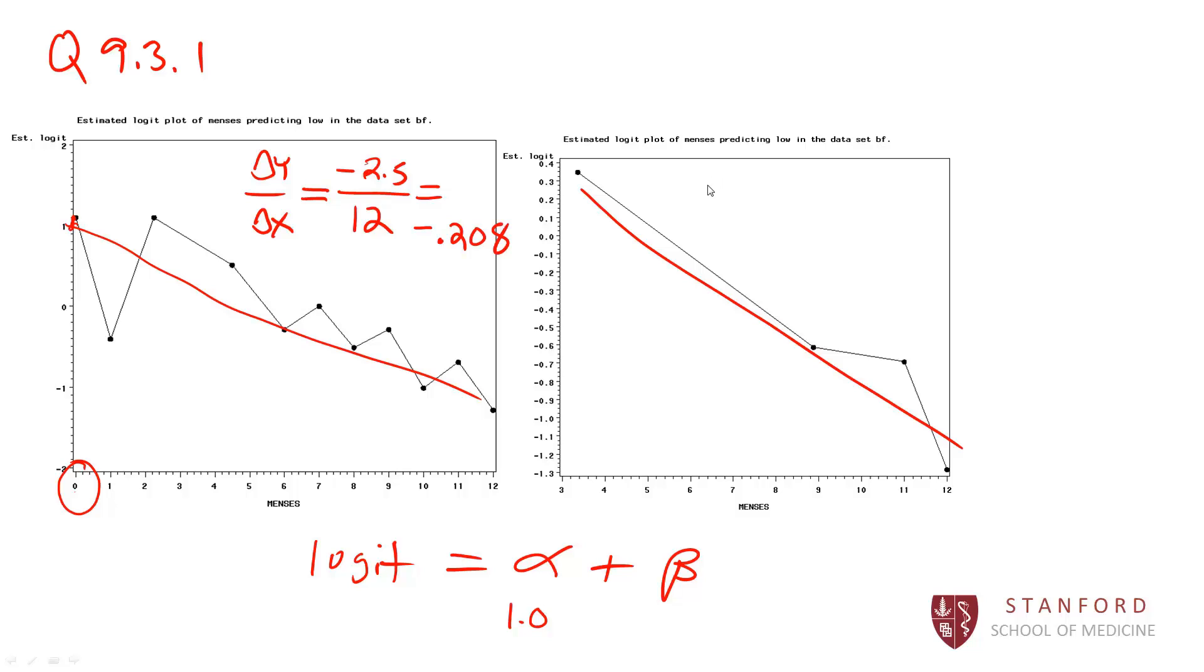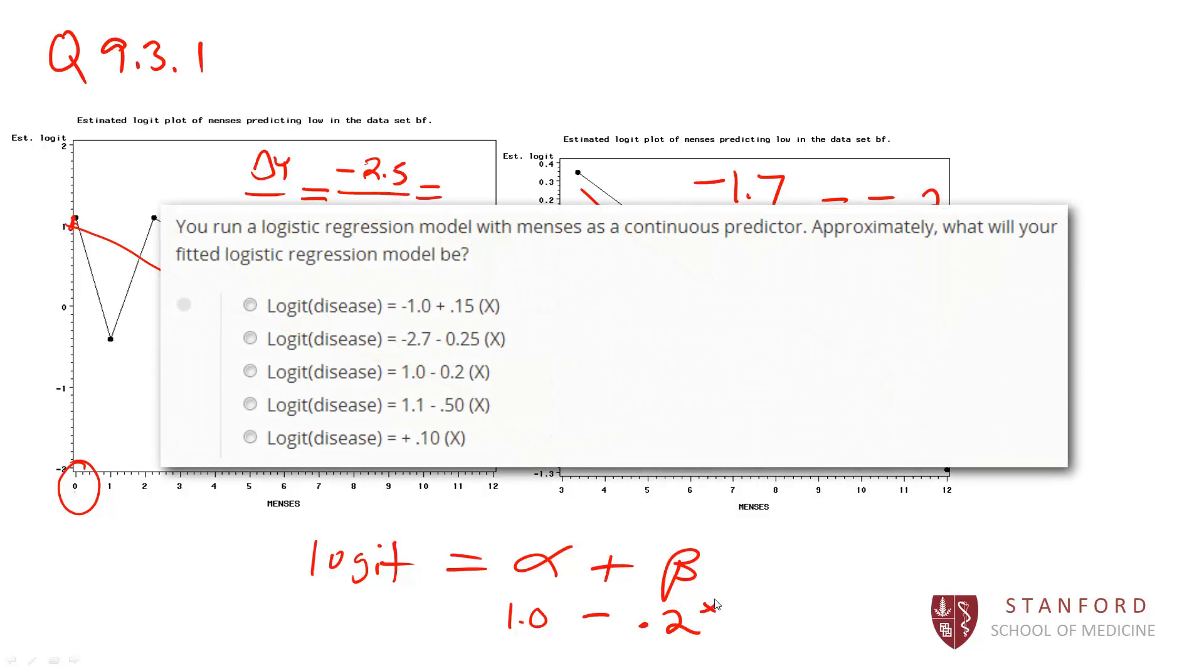and x changes from 3 to 12, which is a change of 9. So that also gives us a slope of around negative 0.2. So the correct model here would be about 1 minus 0.2 times x here, which is the number of menstrual cycles per year. So the correct answer would be c.